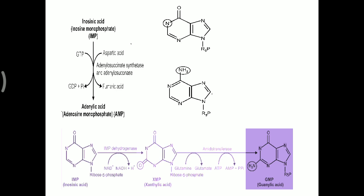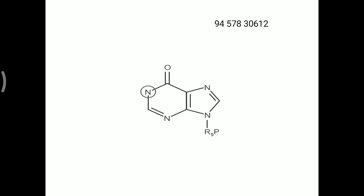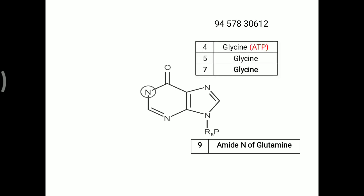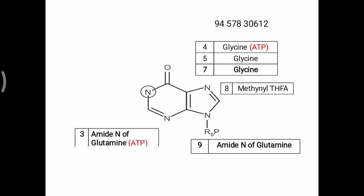For a summary, remember the number sequence 9457830612. If you remember that sequence, it will be easy to understand purine ring formation. First, the 9th nitrogen comes from the amide nitrogen of glutamine. Next, glycine adds the 4th and 5th carbon and 7th nitrogen — first ATP utilized. Second, methanol-THFA adds one more carbon (8th carbon). Then glutamine adds one more nitrogen for ring closure — second ATP. Ring closure is represented by 0 — third ATP. Up to here that is 9457830.